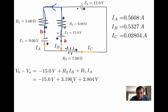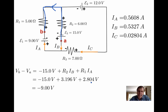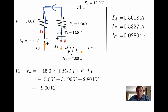Plugging in the values: R2 times Ib gives 3.196 volts, and R1 times Ia gives 2.804 volts. Adding everything together — those two numbers sum to exactly plus 6 — so the total is minus 9 volts, which is exactly the same result we got before. This also serves as a double-check that our currents are correct, because if the currents were wrong, the values would not have matched.